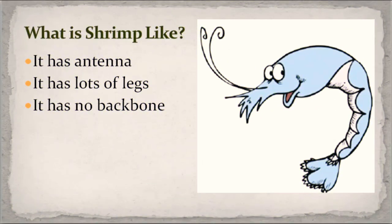What is shrimp like? It has antenna — punya antenna ya. It has lots of legs — memiliki kaki yang jumlahnya banyak. It has no backbone — tidak memiliki tulang belakang.